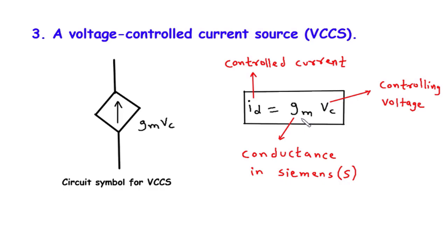By adjusting the conductance, we can control the amount of current flowing through the VCCS. To understand this concept using an analogy: think of the VCCS as a faucet and the controlling voltage VC as the handle. When you turn the handle, you control the flow of water. Similarly, in a VCCS, when we adjust the controlling voltage, we control the flow of current.